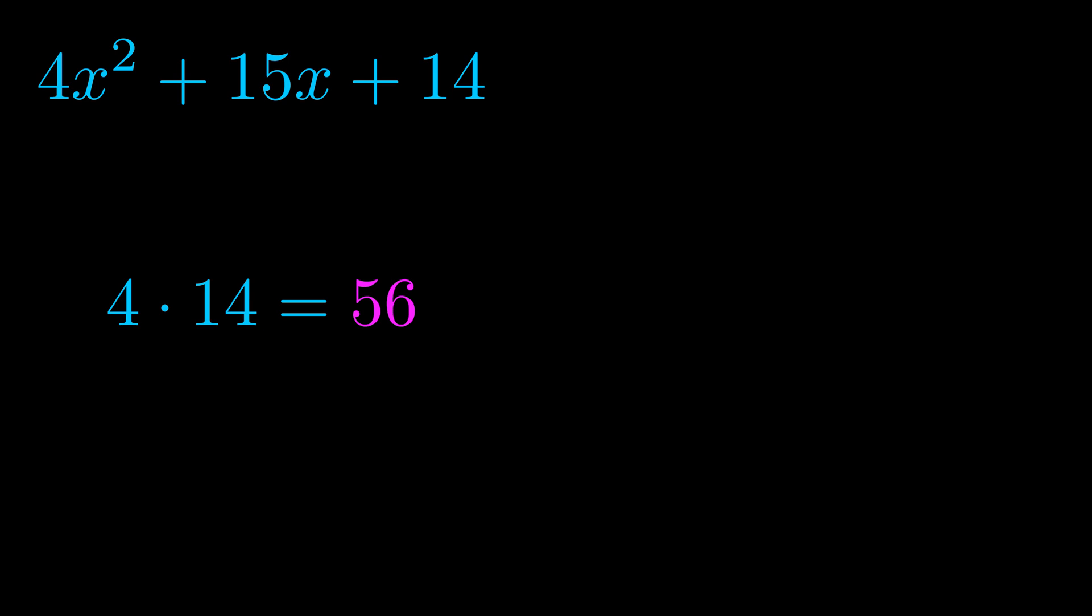Step two is to find all of the pairs which multiply to this number. Now, it turns out you don't really need to find all of them, but go ahead and write down as many numbers as you can that multiply to the magenta value for now. Pause the video and resume when you're ready to continue.